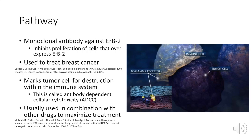The pathway of this drug — it's a monoclonal antibody against ERB2. ERB2 is also called ERB-B2 or HER2; it's all the same protein, and this protein is expressed in all cells. However, it's overexpressed in cancer cells. This is used to treat breast cancer mostly, but it's also used to treat gastric cancer as well. Essentially what this does is it marks the cell to be phagocytosed through a process called antibody-dependent cellular toxicity, or ADCC.